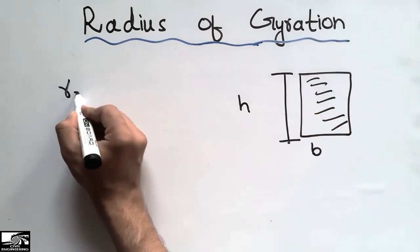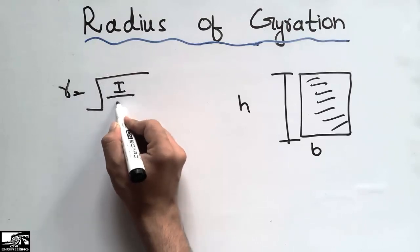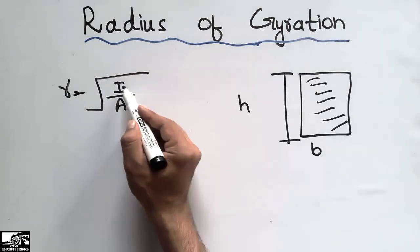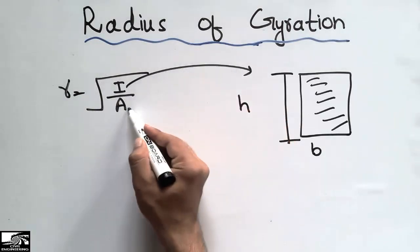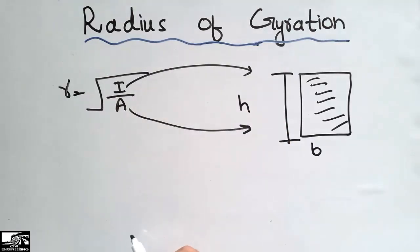We can find the radius of gyration of this object by this formula: moment of inertia divided by the area of the section. So we get the radius of gyration, and this is a really important topic for all civil engineering students.